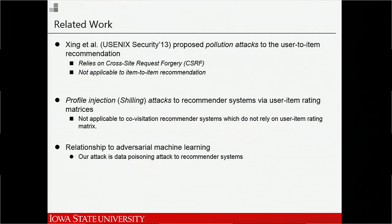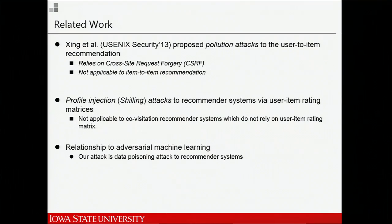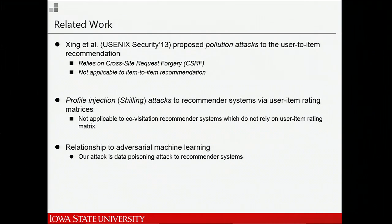A few related works: a USENIX Security 2013 paper proposed the pollution attack to user-to-item recommendation systems, mainly based on forging cross-site requests, targeting single individual users — not applicable to item-to-item recommendation. There is also the profile injection attack, better known as the shilling attack, which injects fake users into the user-item rating matrix to make fake recommendations — also not applicable to our type of recommendation system. Our work is also related to adversarial machine learning, as our attack can be seen as a data poisoning attack to recommender systems.